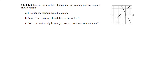Question 122: Leo solved a system of equations by graphing. Estimate the solution from the graph. Looking at the intersection point, it's in between 1 and 2 for x — closer to 1 — and between 2 and 3 for y — closer to 2. So my estimate is approximately x equals 1.25 and y equals 2.25. This is just an estimate because the intersection doesn't fall on a nice grid point.